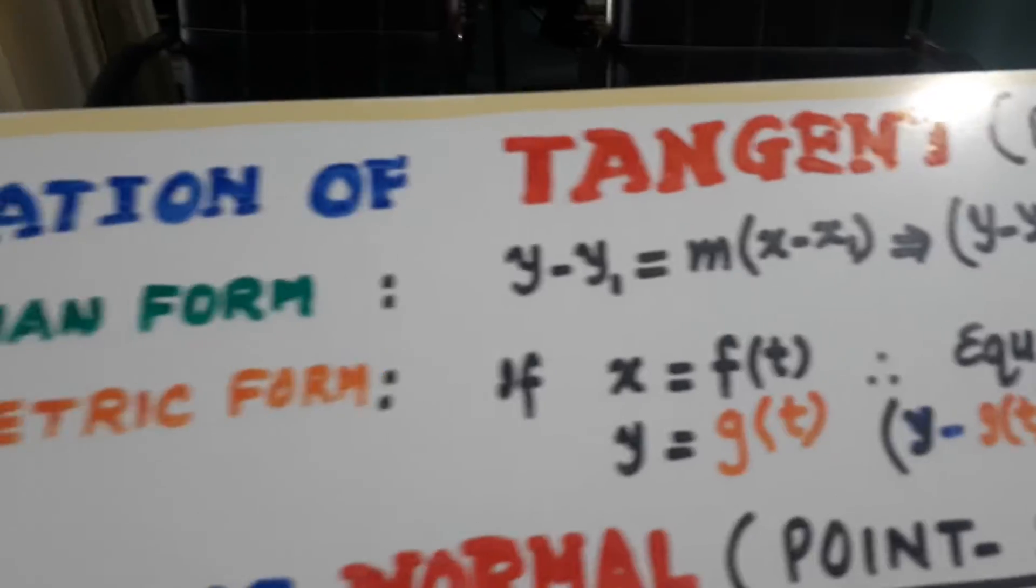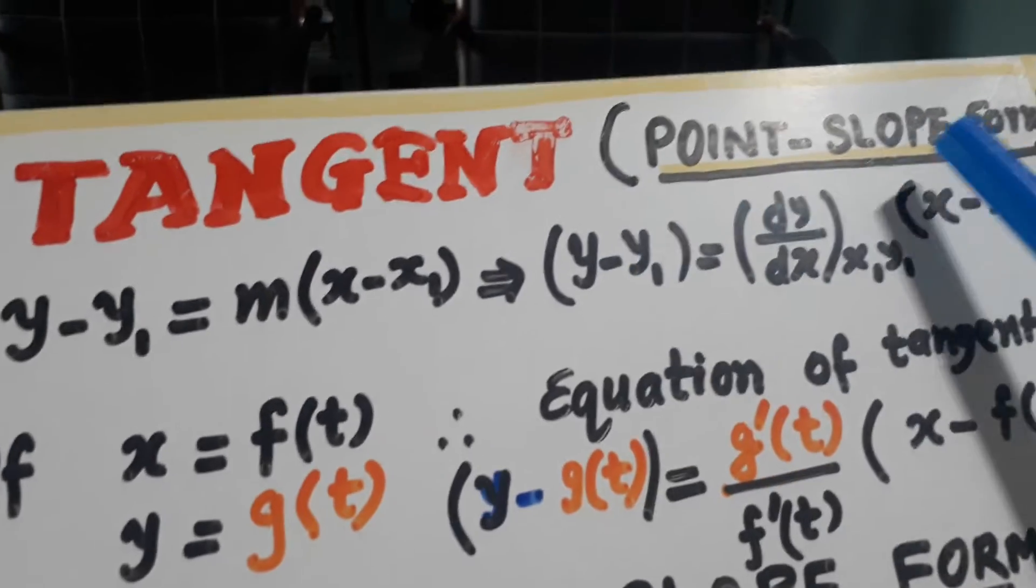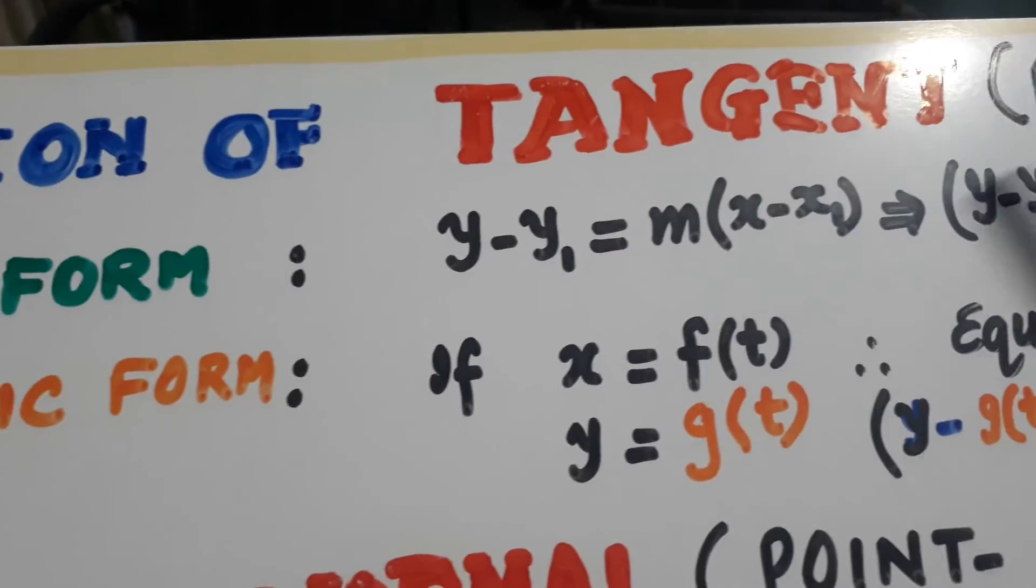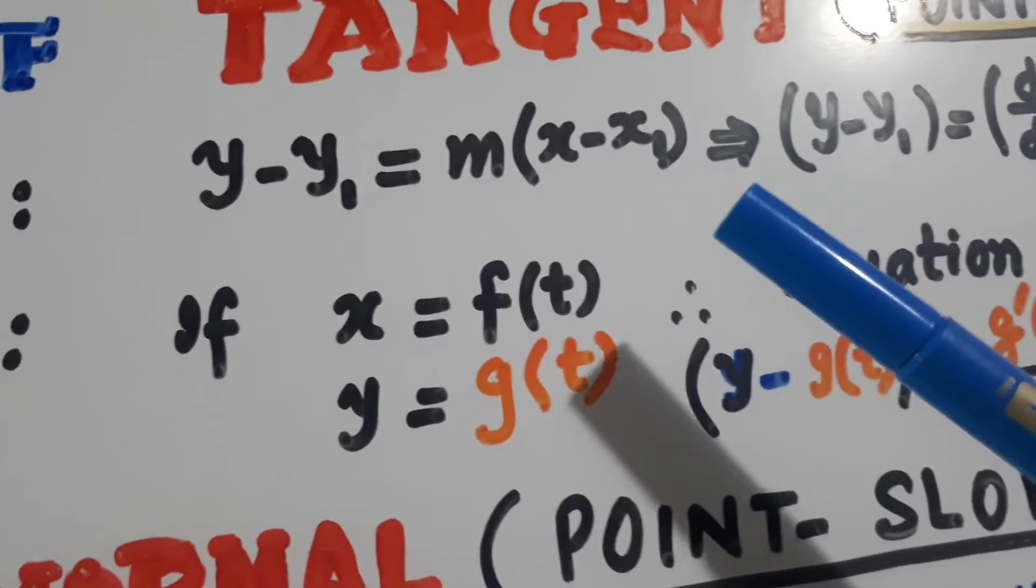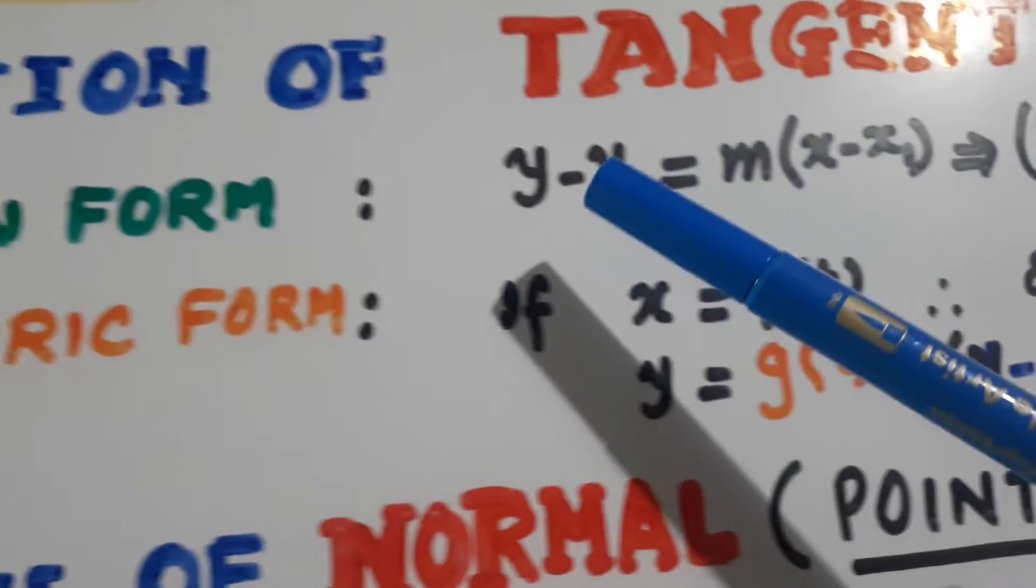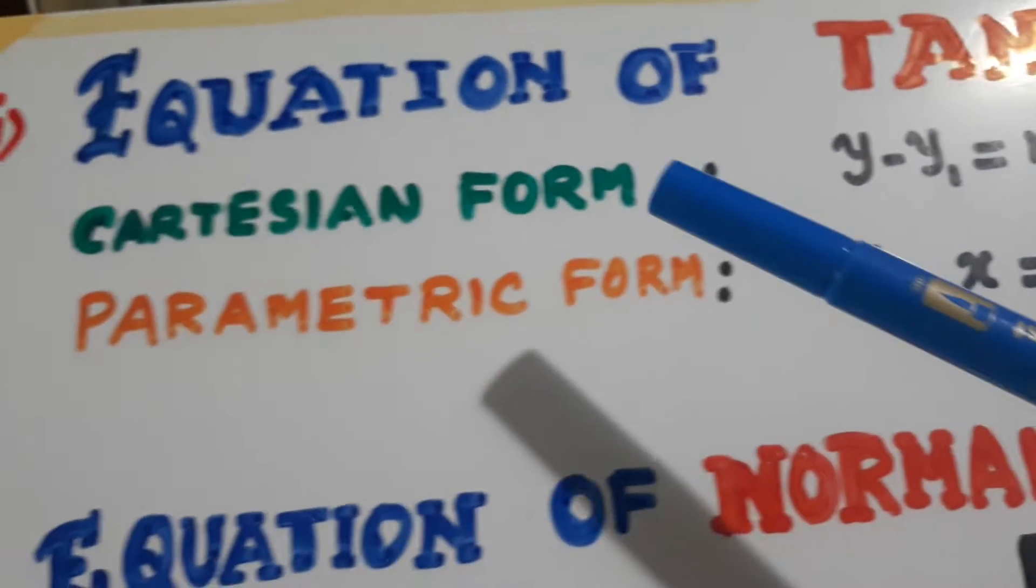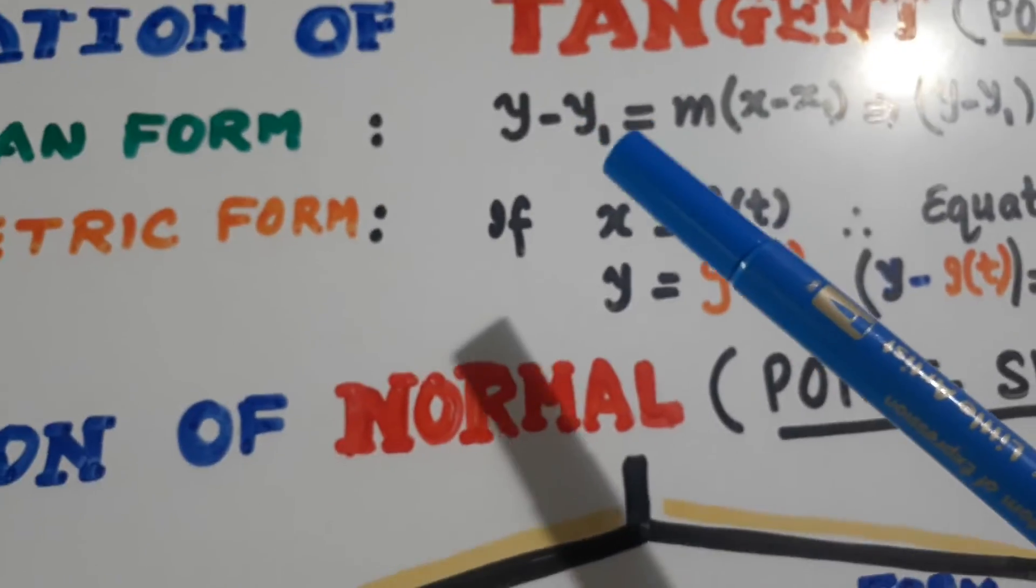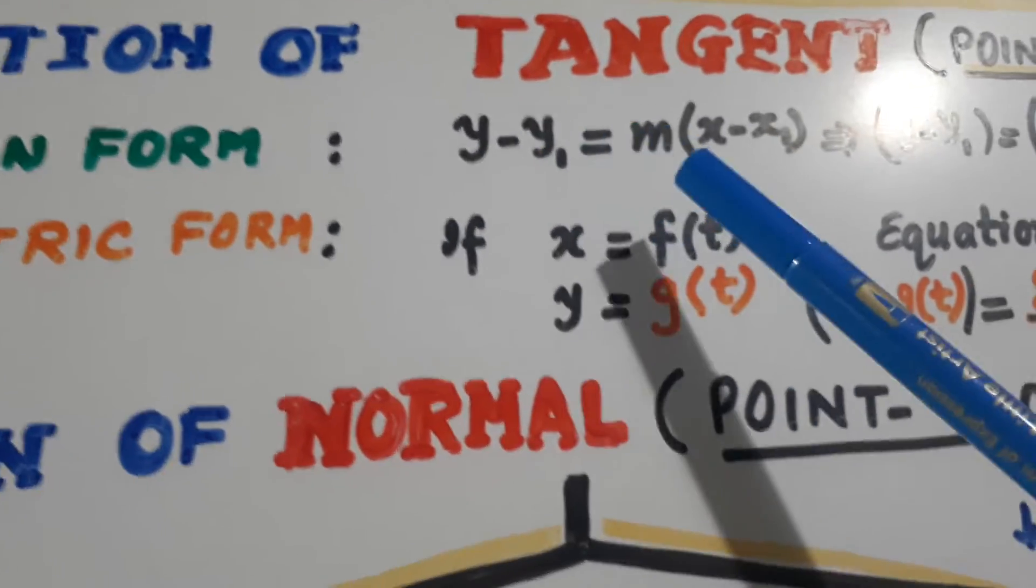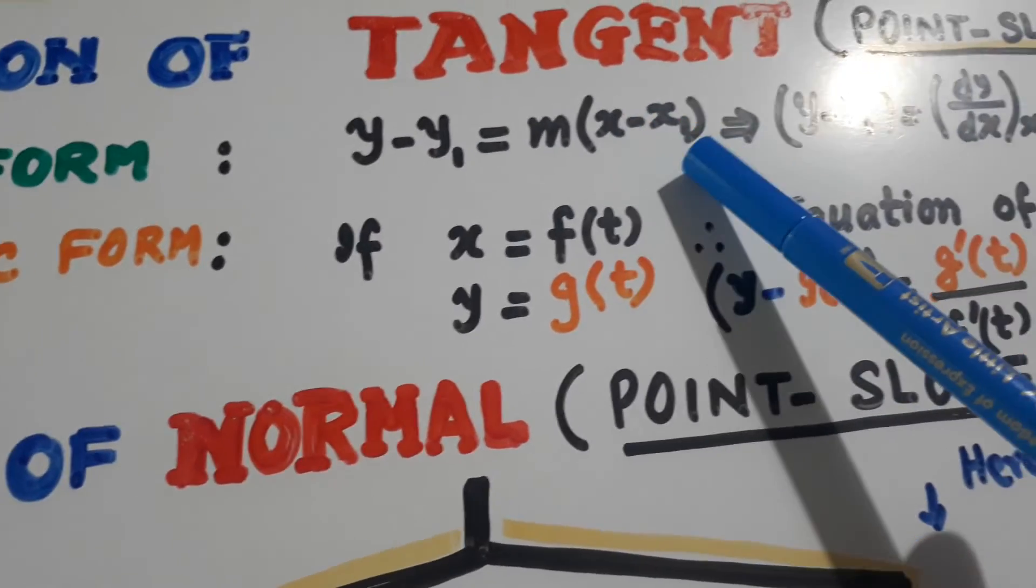Equation of tangent. It is called point slope form. It is known as point slope form. We already know point slope form. It is in Cartesian form. In class 11th, the point slope form was y minus y1 is equal to m(x minus x1).